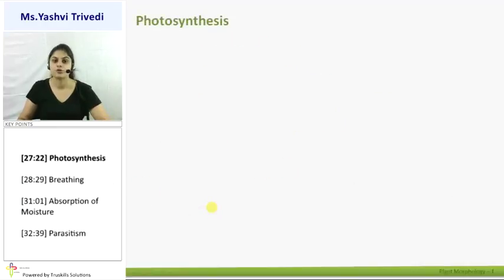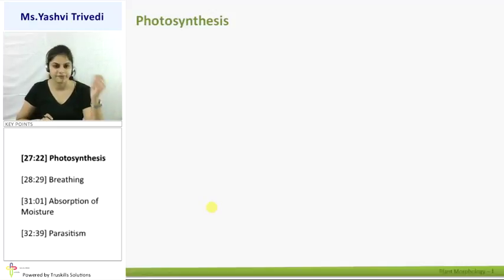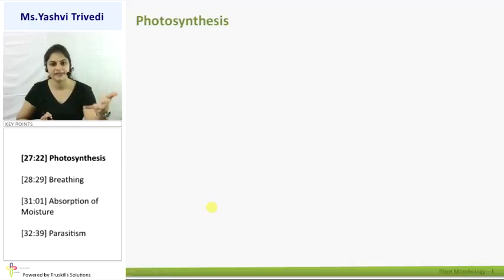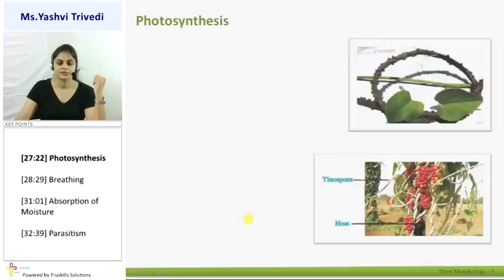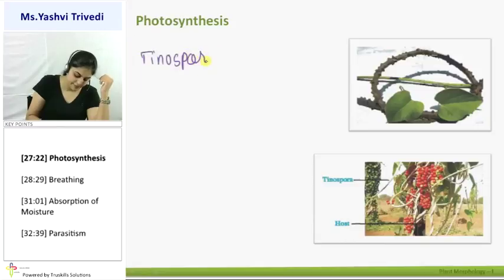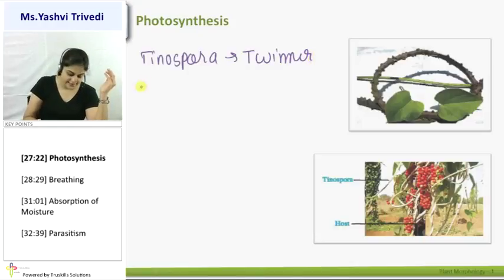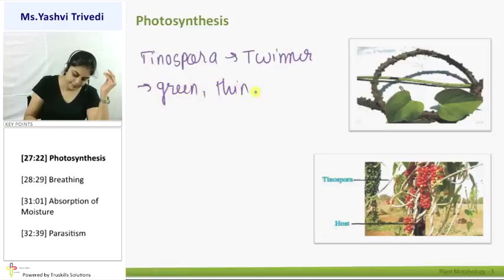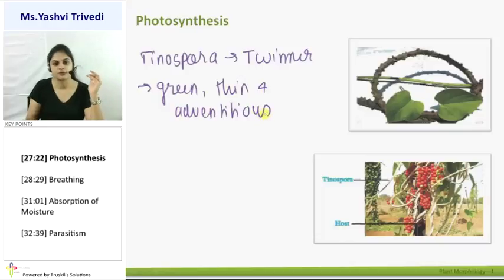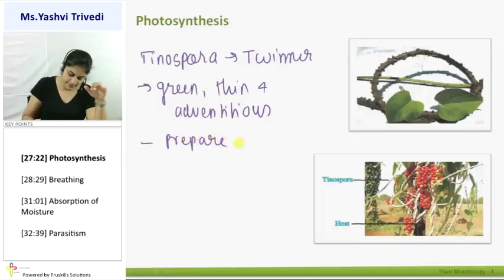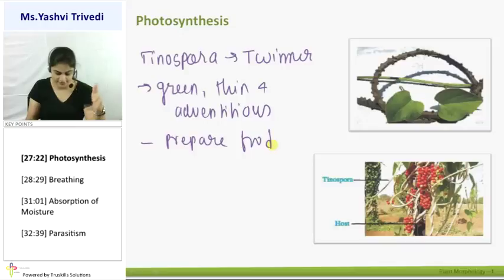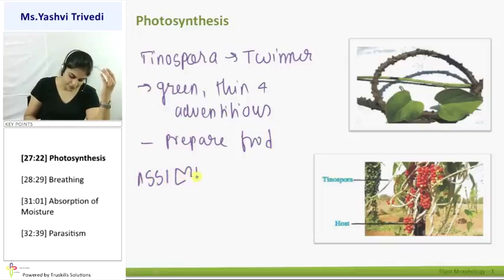The next modified function is photosynthesis. Normally leaves perform photosynthesis, but in certain plants like desert plants that have very few or no leaves, roots must modify for photosynthesis. In Tinospora, a twiner, green, thin, adventitious roots grow from the nodes of the stem. These roots contain chlorophyll and prepare food by photosynthesis — they are called photosynthetic roots or assimilatory roots.